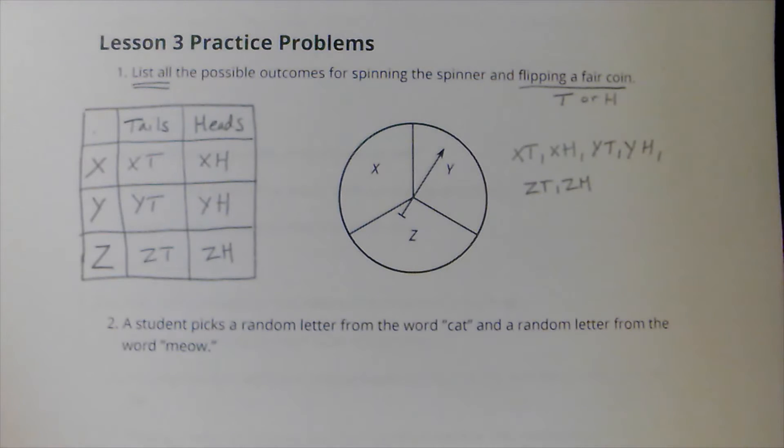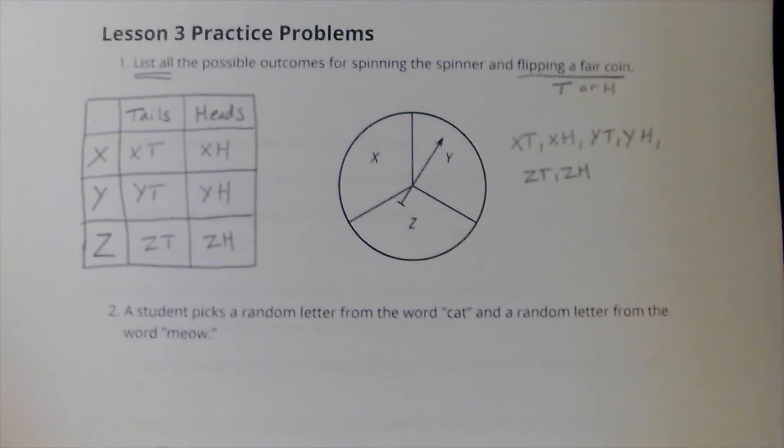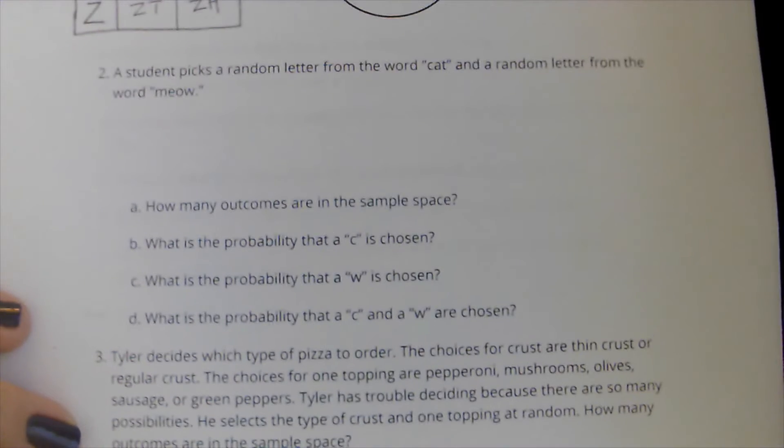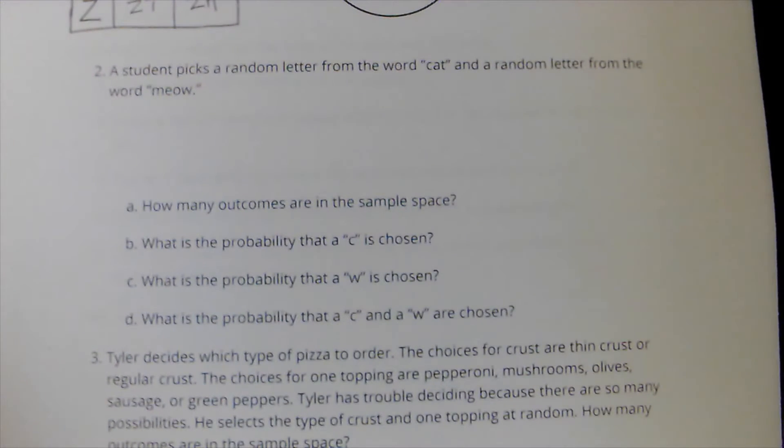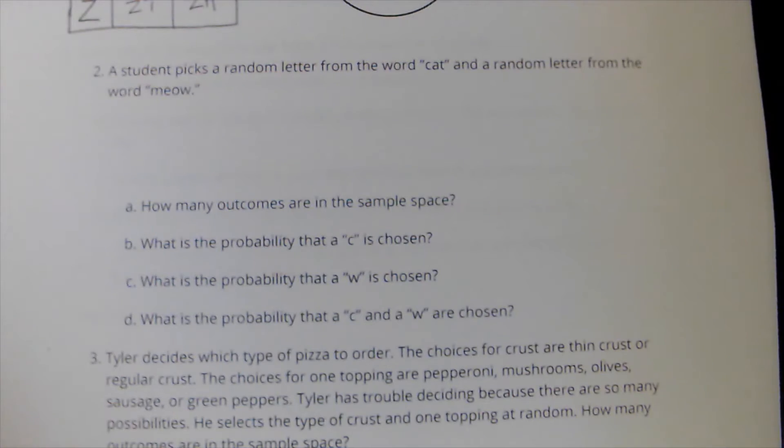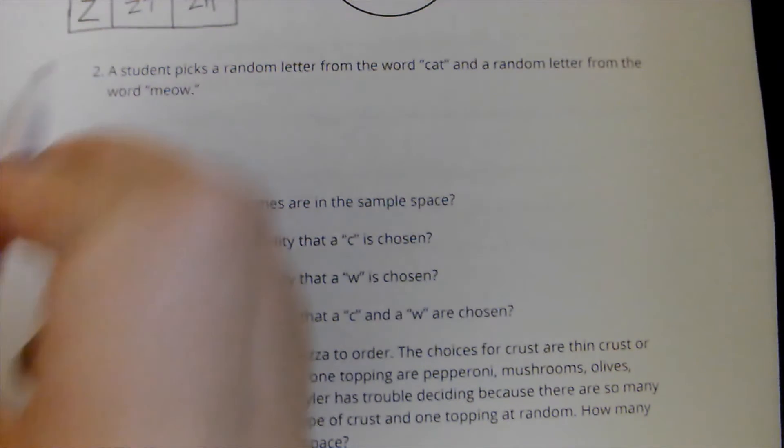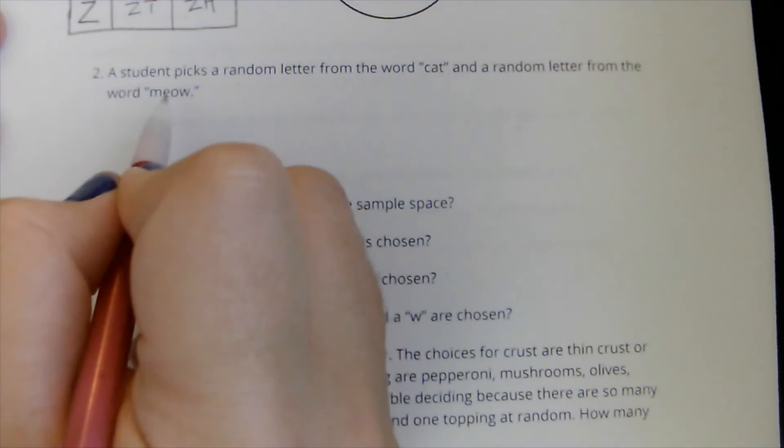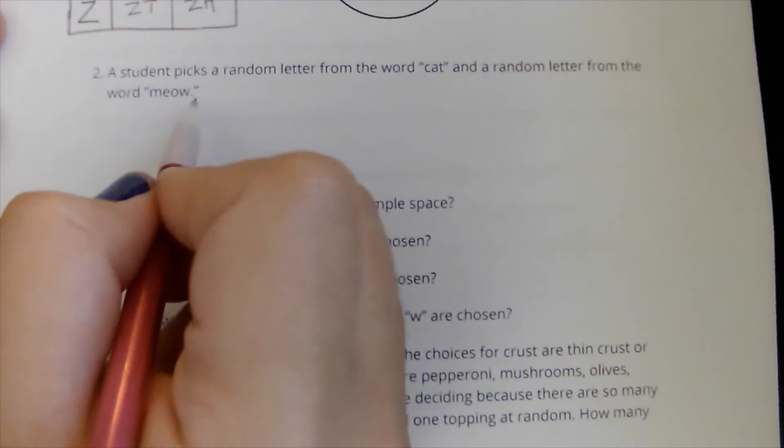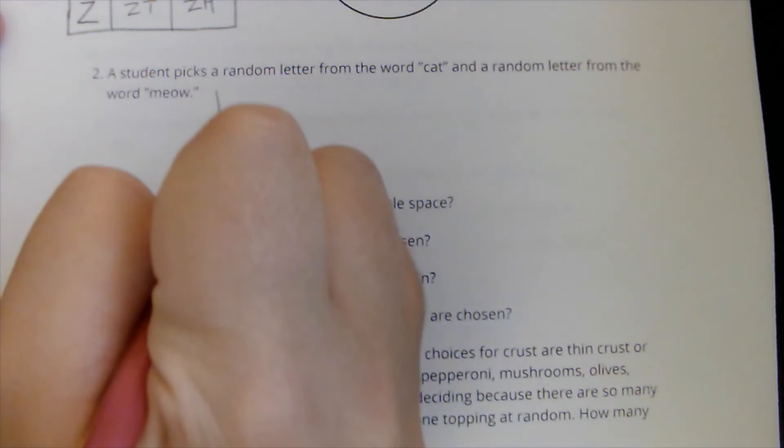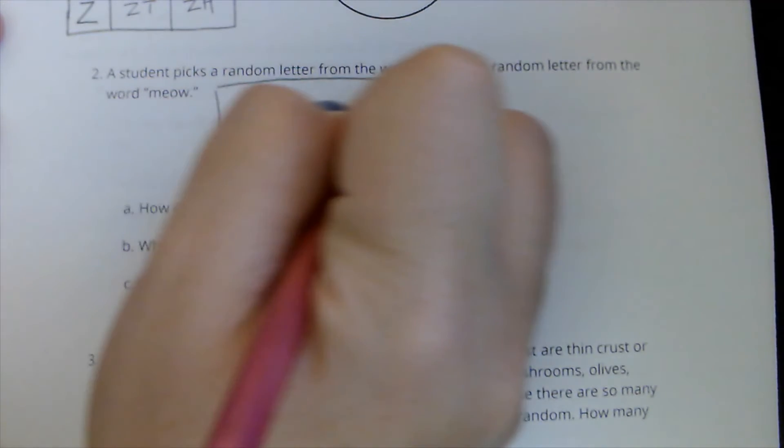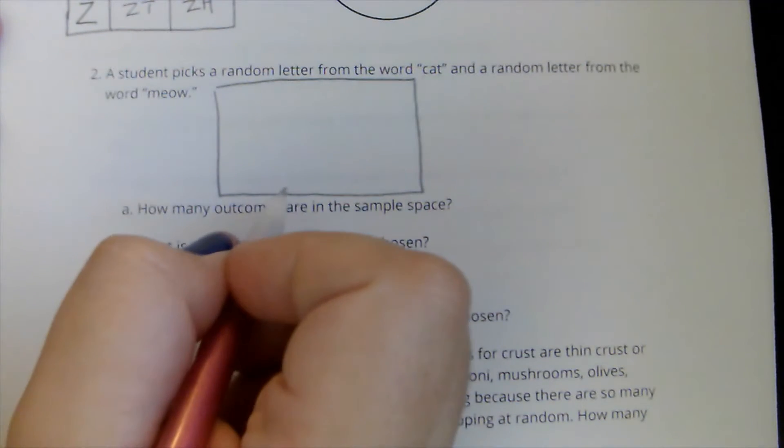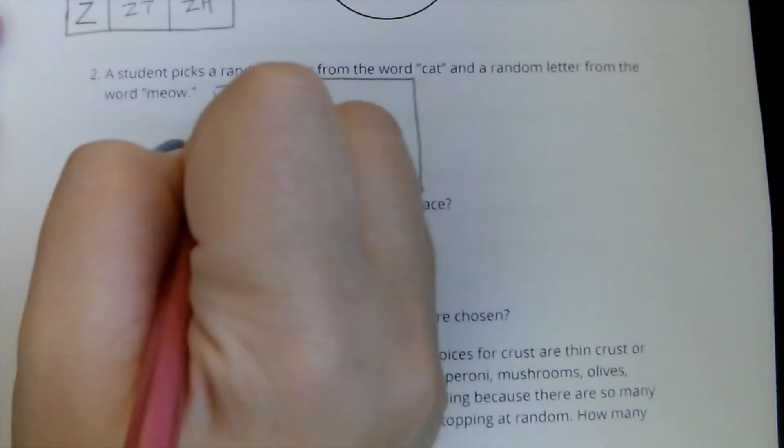Number two is very similar because it says a student picks a random letter from the word cat and a random letter from the word meow. So along those same lines, I've got a pick from cat as my first set of options. And then I've got a pick from meow as my second set of options. I can actually make a table for this one also. Actually, this one doesn't ask me to list out the sample space. So I'm just going to create it in the table.